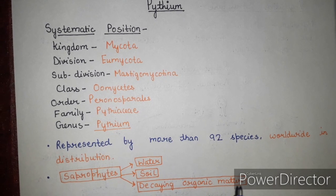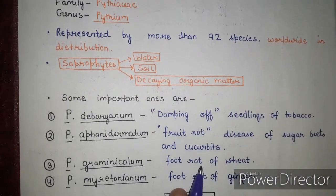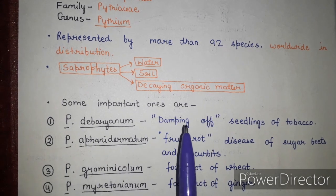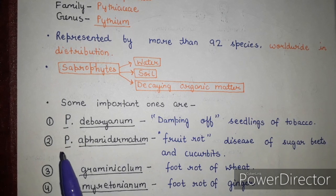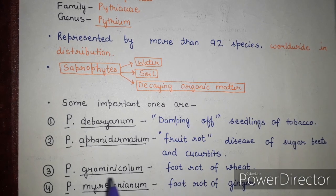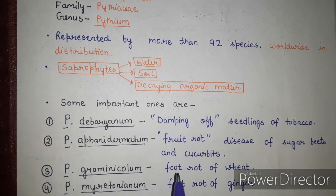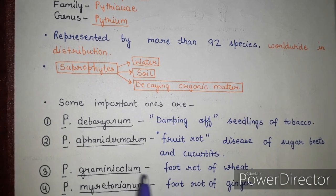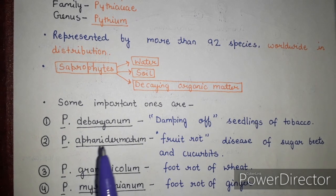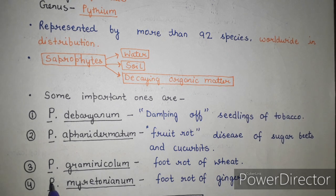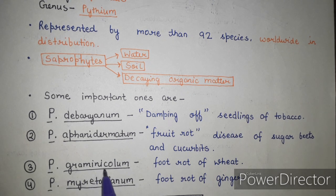Pythium species can be found in water, soil, and decaying organic matter. Some important species: Pythium debaryanum causes damping-off of tobacco seedlings; Pythium aphanidermatum causes fruit rot of sugar beets and cucurbits; Pythium graminicola causes foot rot of wheat; and Pythium myriotylum causes foot rot of ginger. These species are named according to their hosts.